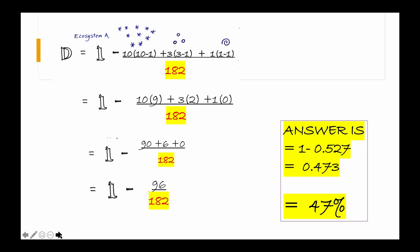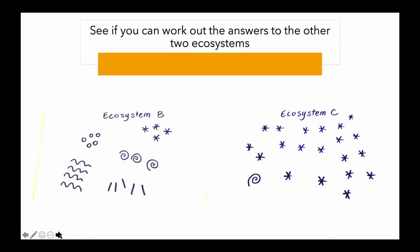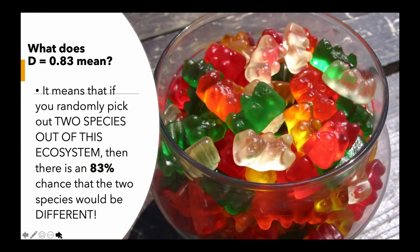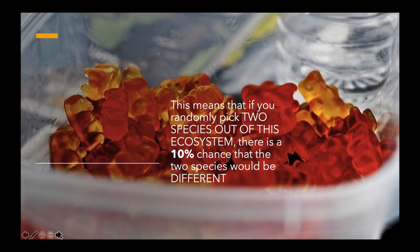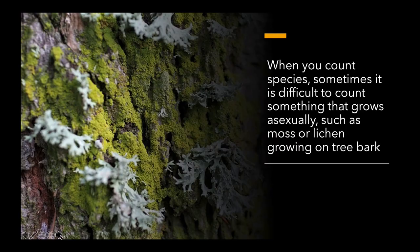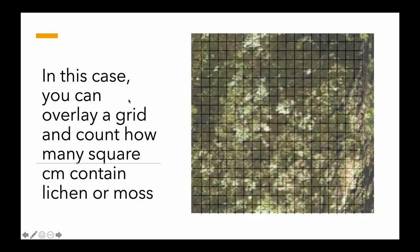To summarize: Ecosystem A has 47%, Ecosystem B has 83%, and Ecosystem C has only 10% as the biodiversity measure. When counting species, it can be difficult to count organisms that grow asexually, such as moss or lichen on tree bark. In that case, you can overlay a grid and count how many square centimeters contain the lichen or moss — you count a unit of area rather than individual organisms.